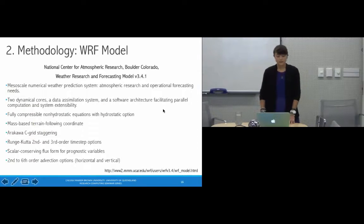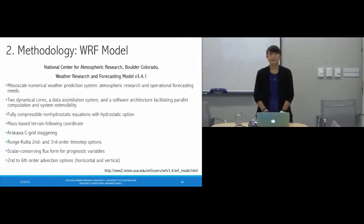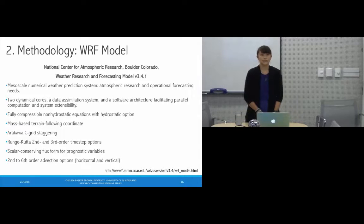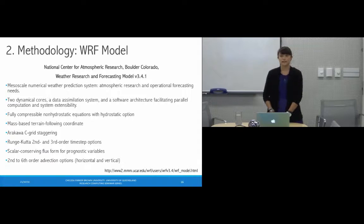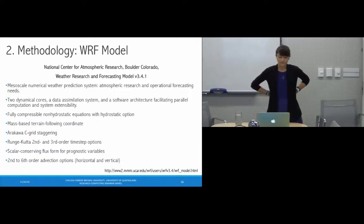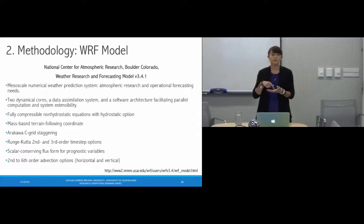To simulate these three cases, we're using the Weather Research and Forecasting model, WRF, version 3.4.1, developed and maintained by the National Center for Atmospheric Research in Boulder, Colorado. It's a mesoscale numerical weather prediction system commonly used for both research and operational forecasting. It has two dynamical cores; the one I use for real data cases is the Advanced Research WRF. WRF uses fully compressible non-hydrostatic equations, is terrain-following, and uses a staggered grid where wind variables are recorded at grid cell boundaries while temperature and pressure are recorded at grid cell centers.